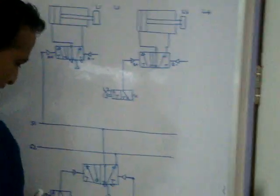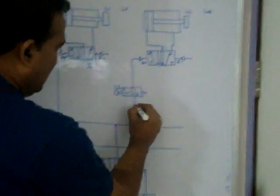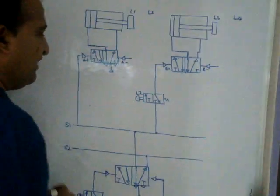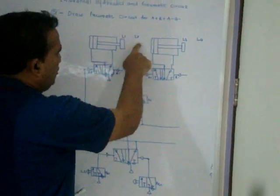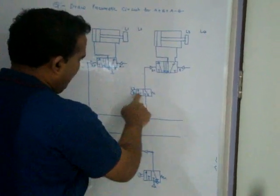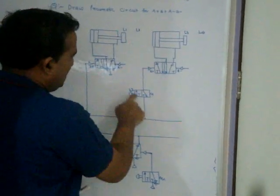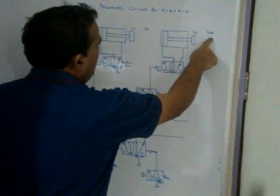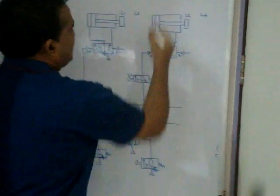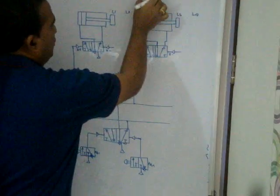First, L3 is active, so S1 turns on, meaning A plus is on. It moves to L2. When it reaches L2, that valve actuates and B plus turns on. The piston goes to L4. Half cycle — Group 1 — is over.